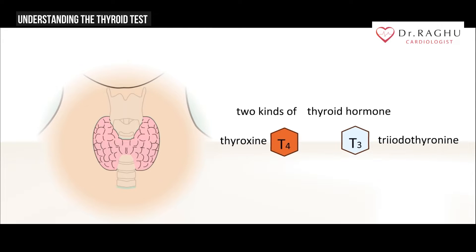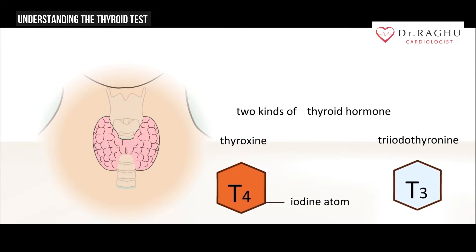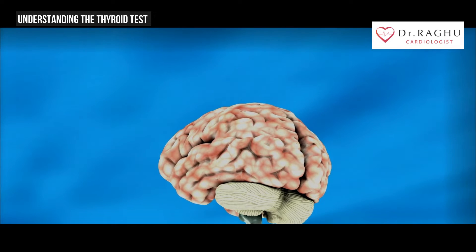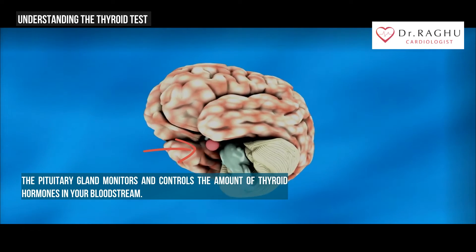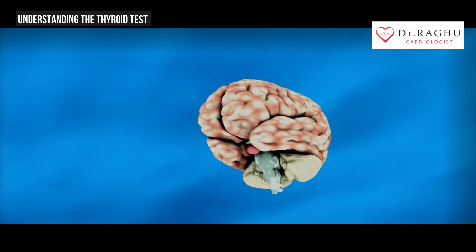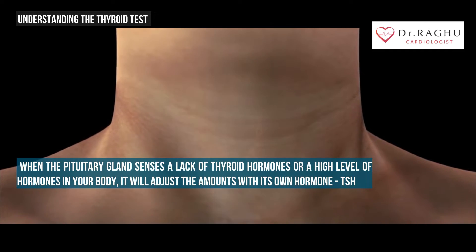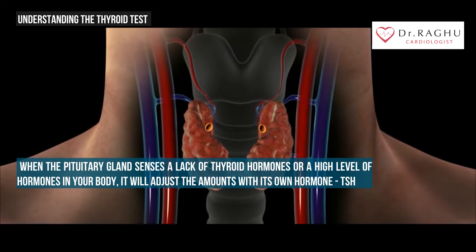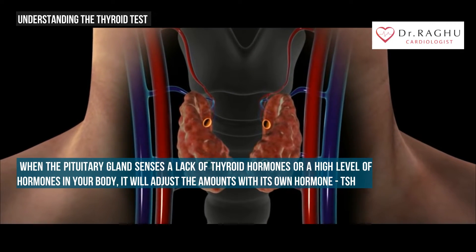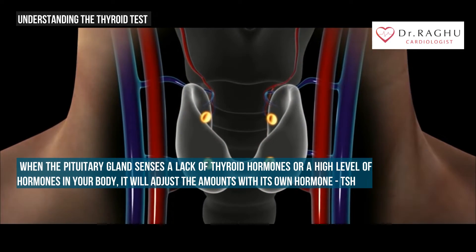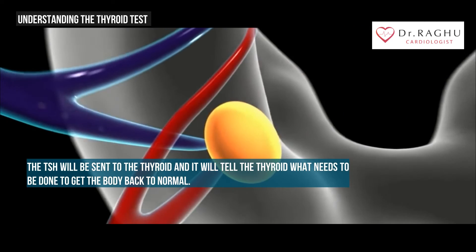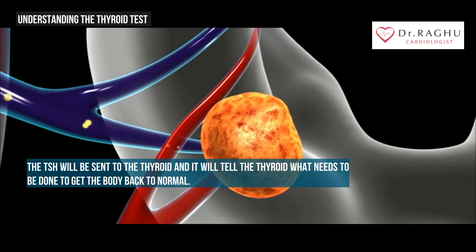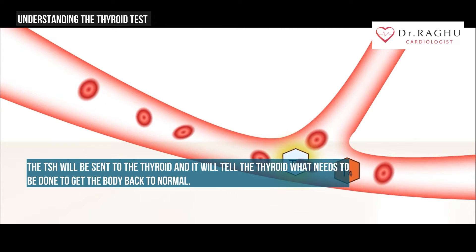The thyroid controls your metabolism with specific hormones — T4 and T3 are the two hormones which tell your body's cells how much energy to use. As the hormones are used, the thyroid creates replacements. This is supervised by the pituitary gland, located in the center of the skull below your brain. The pituitary gland monitors and controls the amount of thyroid hormones in your bloodstream. When it senses a lack or excess of thyroid hormones, it will adjust the amounts with its own hormone, called thyroid stimulating hormone (TSH), to tell the thyroid what needs to be done to get the body back to normal.